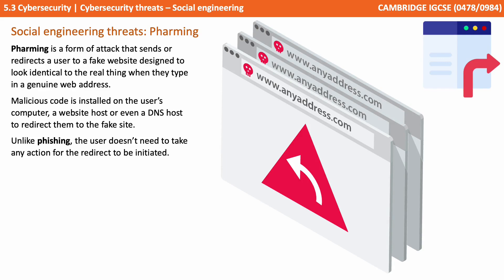Pharming is a form of attack which sends or redirects the user to a fake website designed to look identical to the real thing when they type in a genuine web address. Malicious code is installed on a user's computer, website host, or even a DNS host in order to redirect them to the fake site. Unlike phishing, the user doesn't need to take any action for the redirect to be initiated.